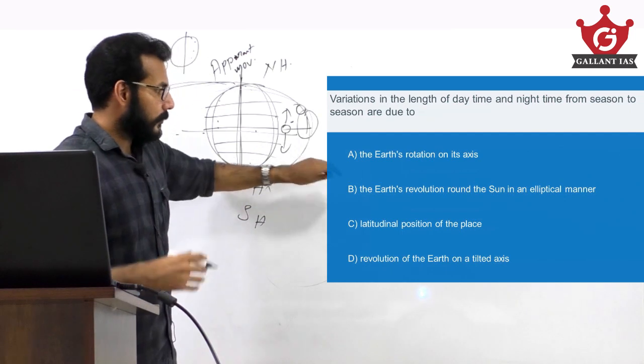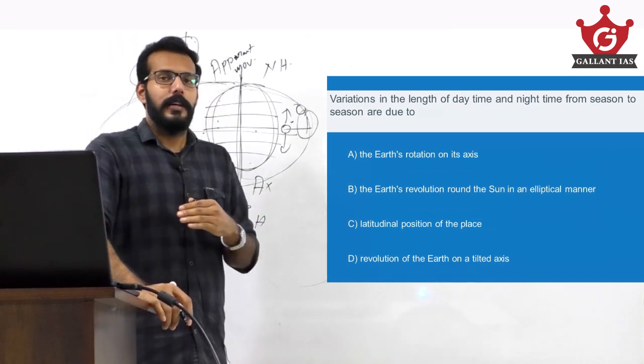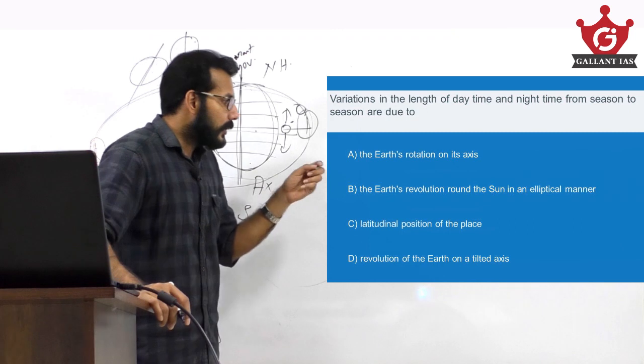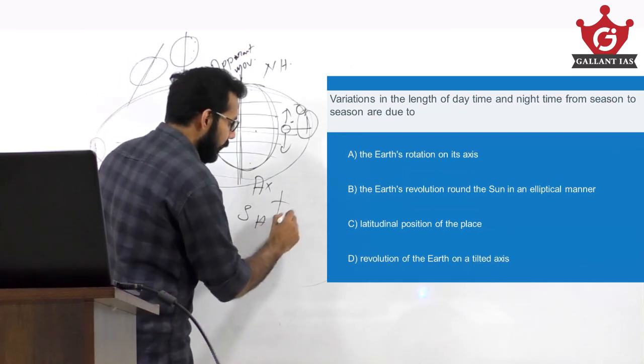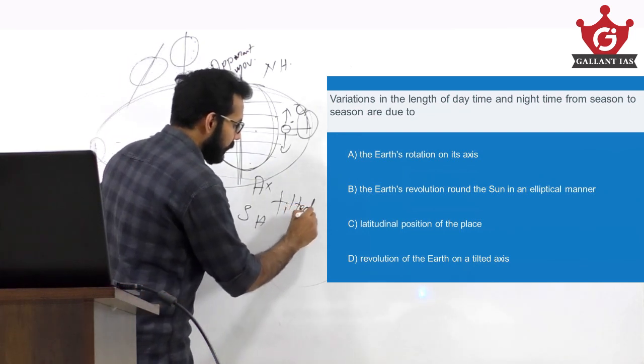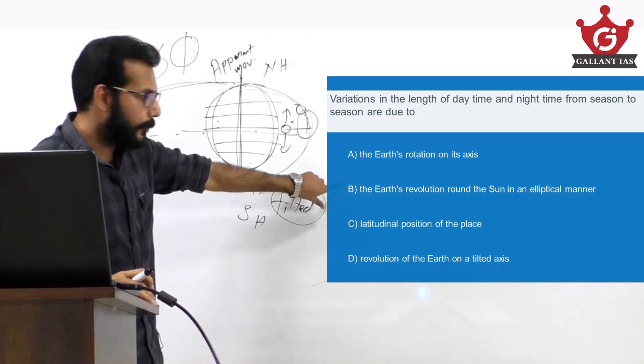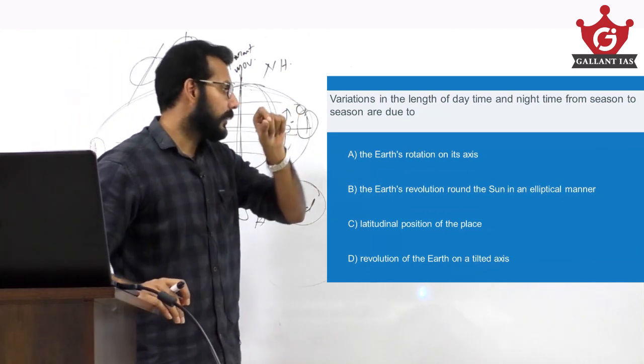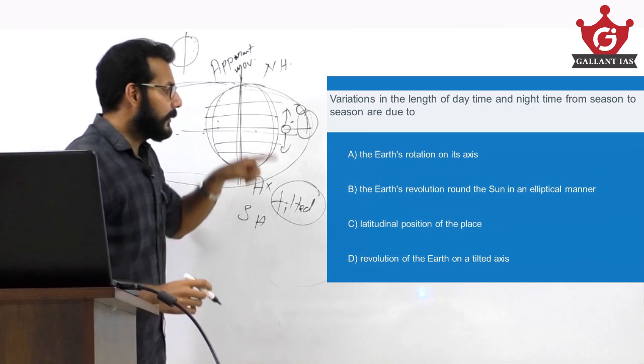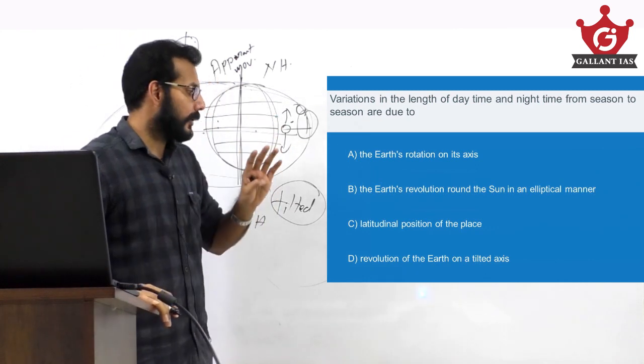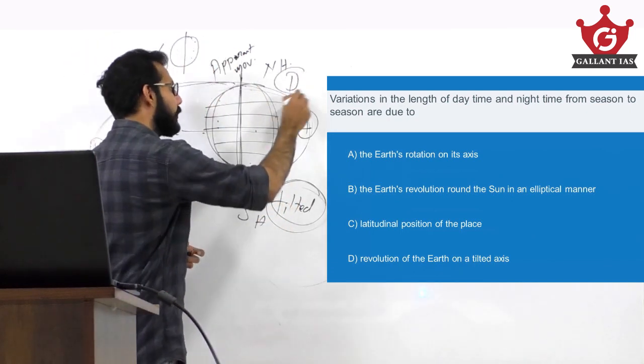Considering each option carefully - remember, these are the kind of questions which are very hard to prepare because each of them are closely related and seem correct. But it is that last part, the tilted axis. Option B is almost close - the Earth's revolution around the Sun in an elliptical manner is true, but it does not answer the question. For the question to be answered clearly and thoroughly, the words tilted axis have to be added. So the answer is undoubtedly D.